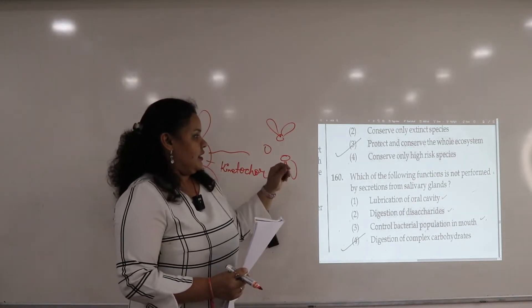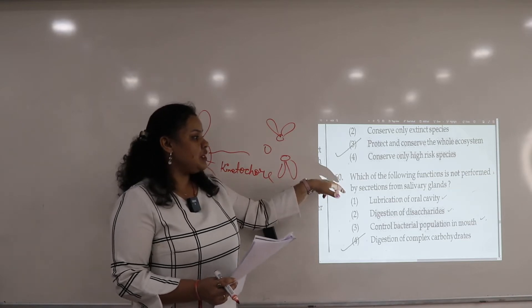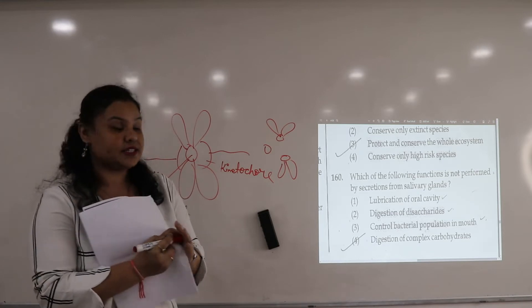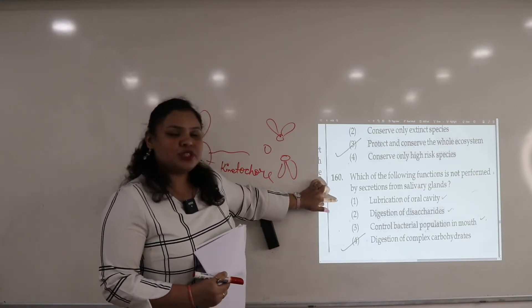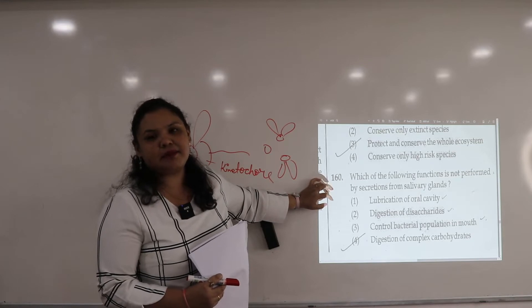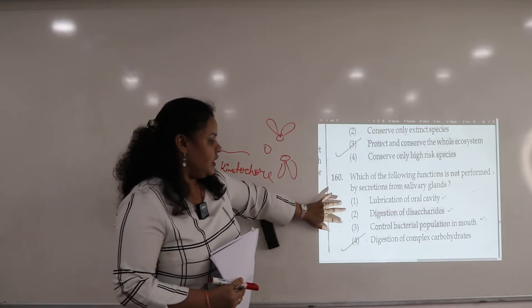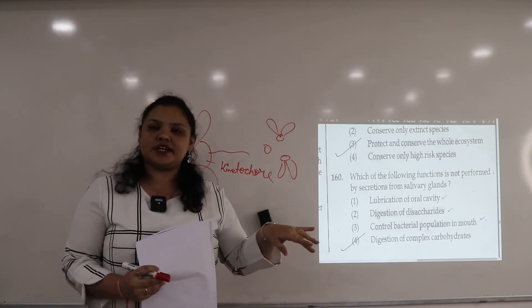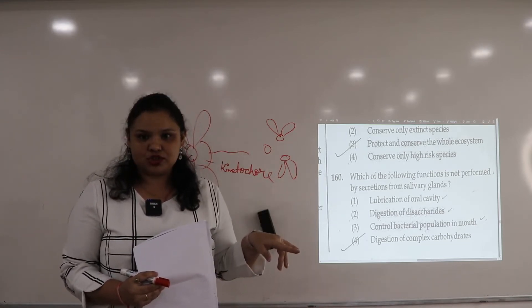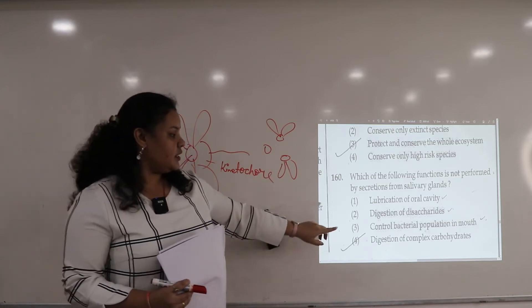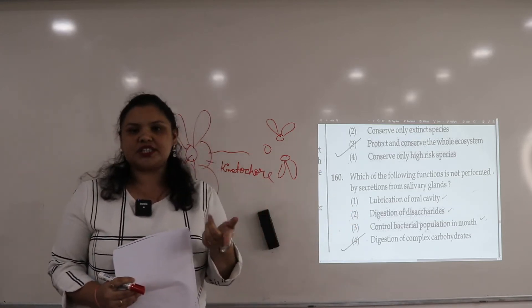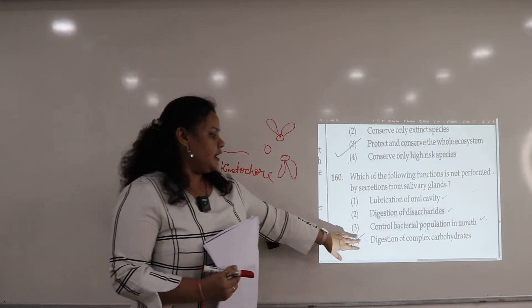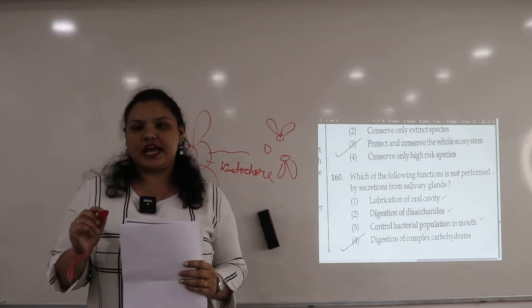Question number 160: which of the following functions is not performed by secretions from salivary glands? Mucin release which lubricates the buccal or oral cavity. Next, option 2: digestion of disaccharide. It converts polysaccharide starch to disaccharide maltose. Maltose does not do digestion. Third, control bacterial population. Saliva consists of lysozyme and that is an antibacterial agent. Digestion of complex carbohydrates is the function of salivary glands.